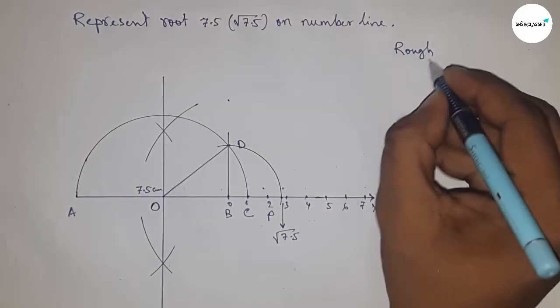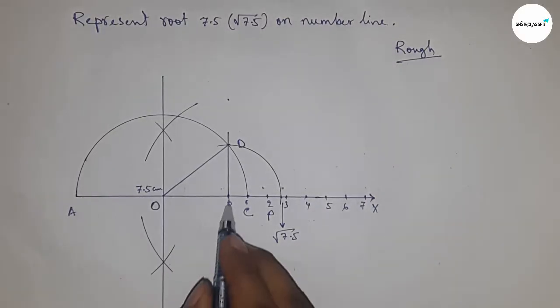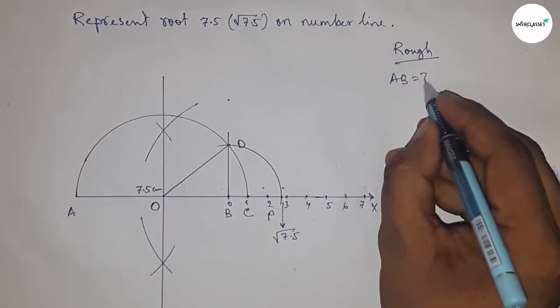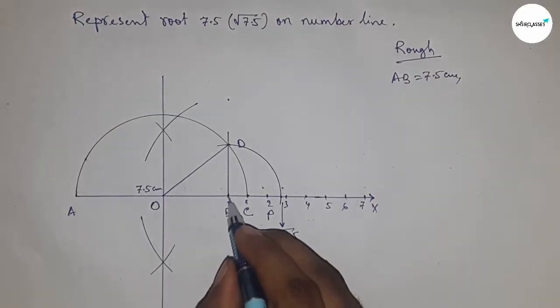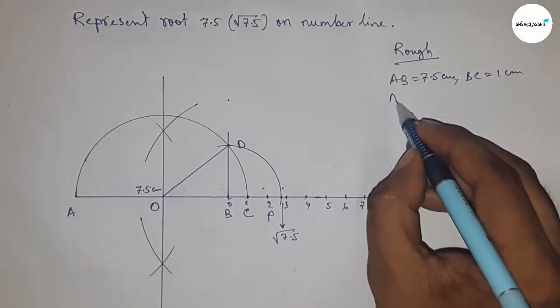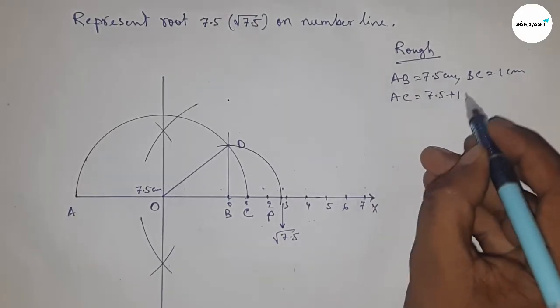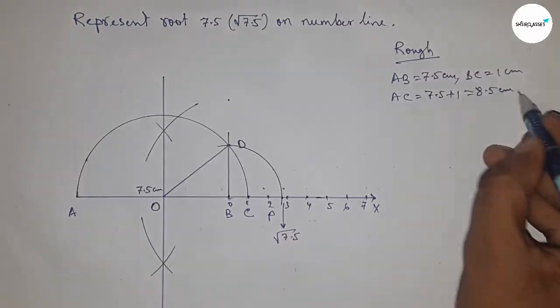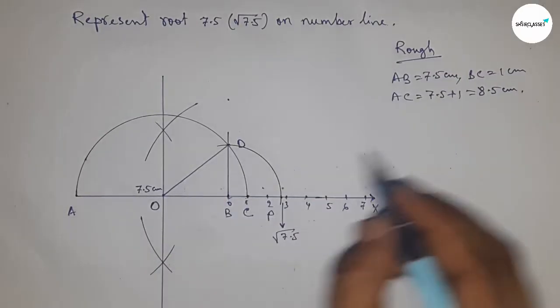Now, roughly discussing the calculation. So given AB equals 7.5 centimeters, BC equals 1 centimeter. So AC equals 7.5 plus 1, which equals 8.5 centimeters. Now radius OC, OD, and OA equal 8.5 by 2 centimeters.